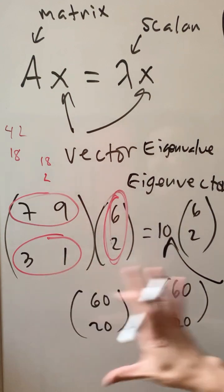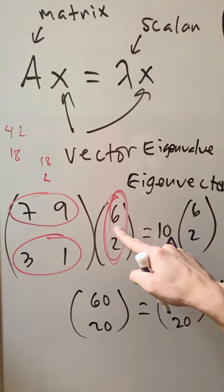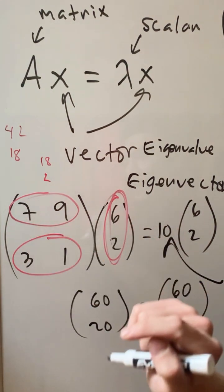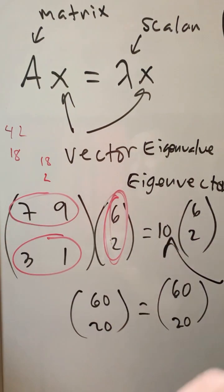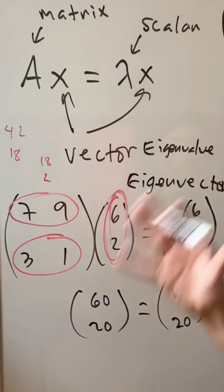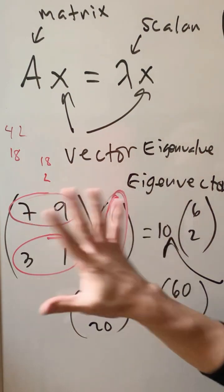So because this happens, we call this an eigenvector of this matrix and this an eigenvalue of this matrix. But it must happen like this. You're probably thinking this happens all the time for any randomly chosen numbers — it does not. Let me convince you that it doesn't always work.